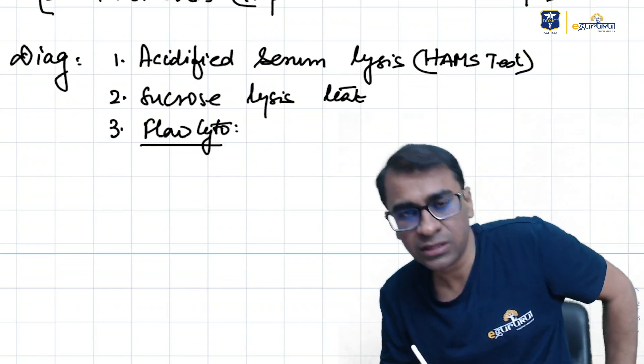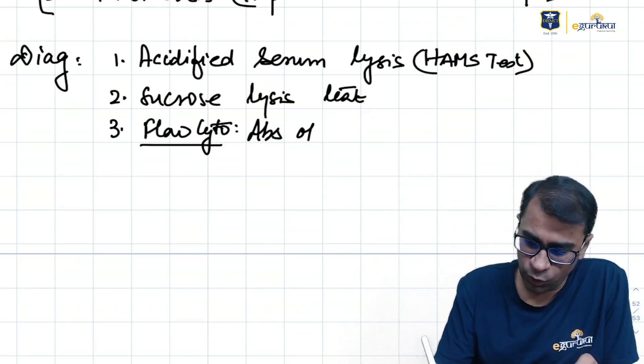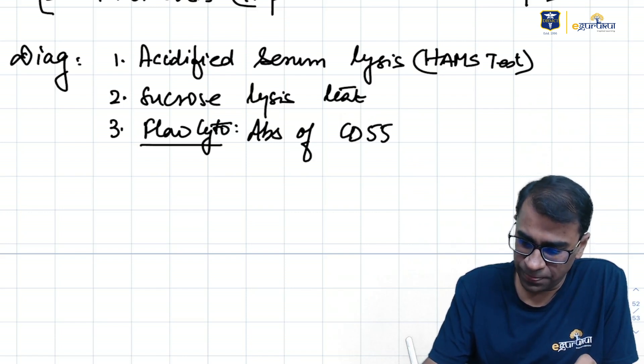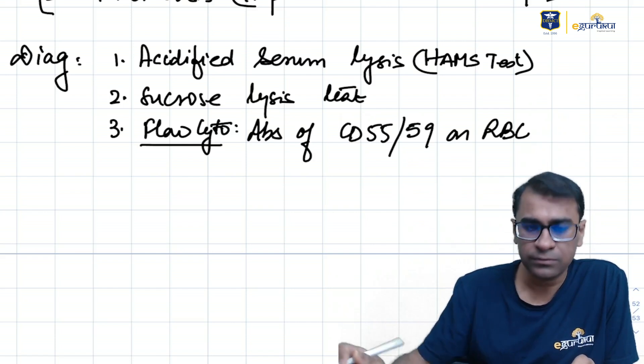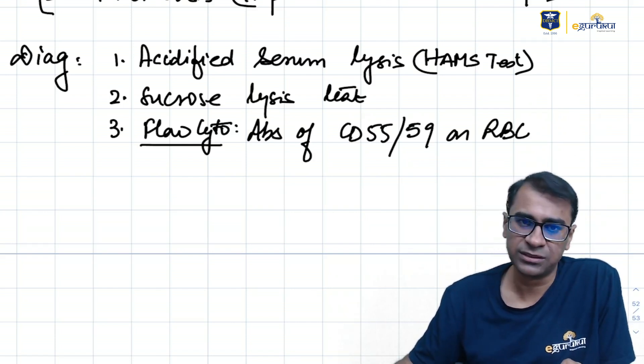In flow cytometry, there is absence of CD55 and 59 on RBCs. It is the best test.